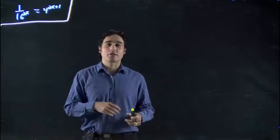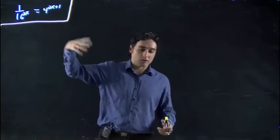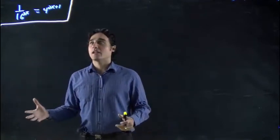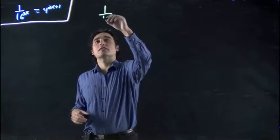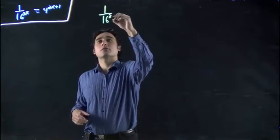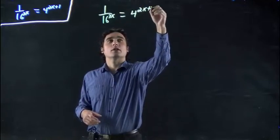Hi, we're going to be looking at another exponential equation. In this case, remember, we want to solve them, trying to solve for x. And in this case, we've added a wrinkle, because what we have on the left side is 1 over 16 to the 3x. And that's equal to 4 to the 2x plus 1.